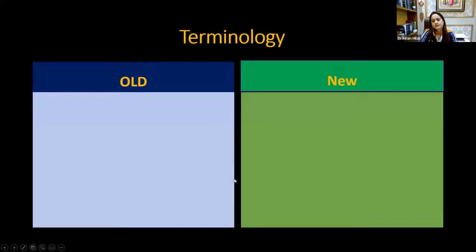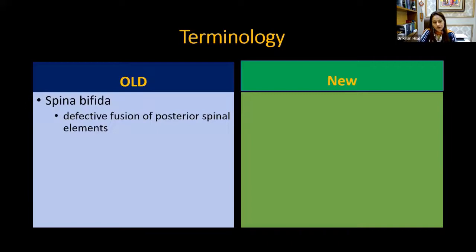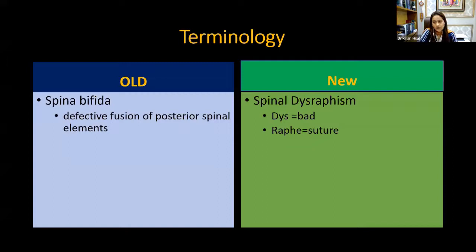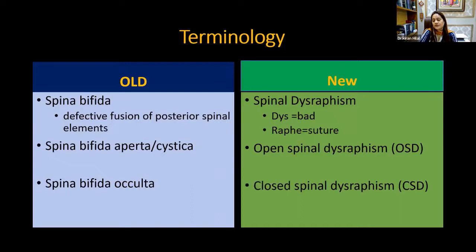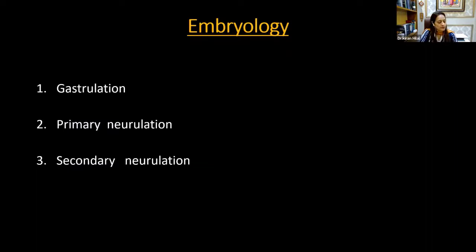Let's start with the terminology. Initially, spina bifida was the term for defective fusion of posterior spinal elements. This term is currently replaced by the new term, spinal dysraphism — a Greek word where 'dys' means bad and 'raphe' means suture, so it means defective back suturing. Previously, the old term spina bifida aperta or cystica has been replaced with open spinal dysraphism, and spina bifida occulta has been replaced with closed spinal dysraphism.